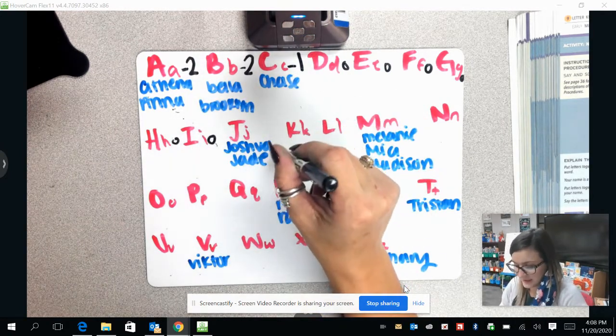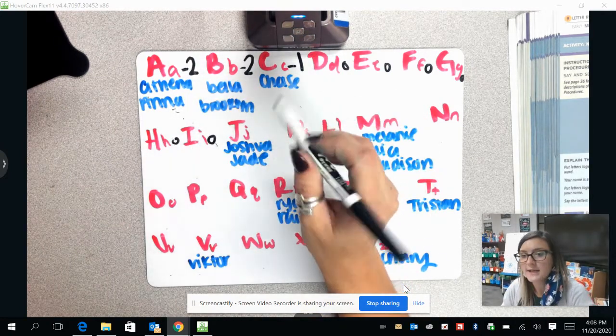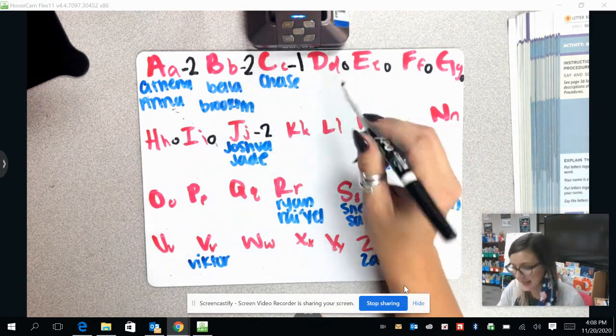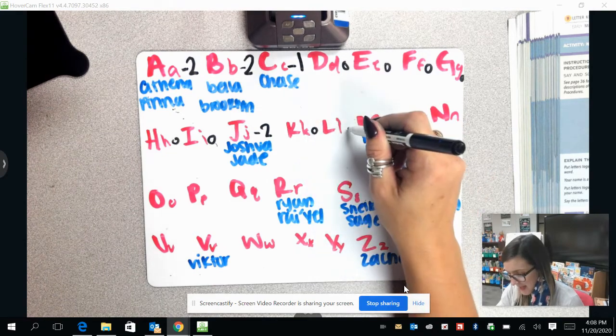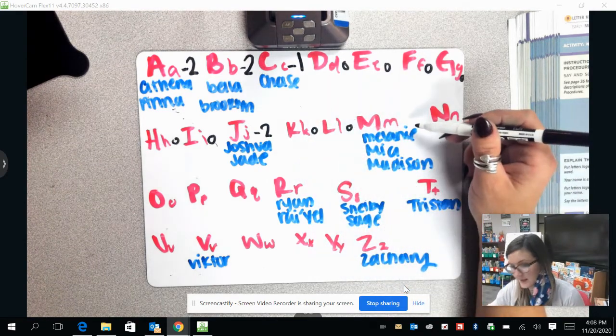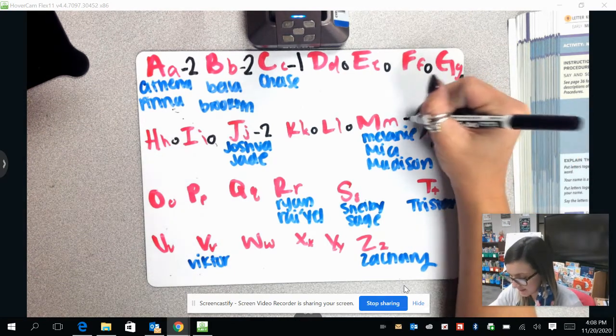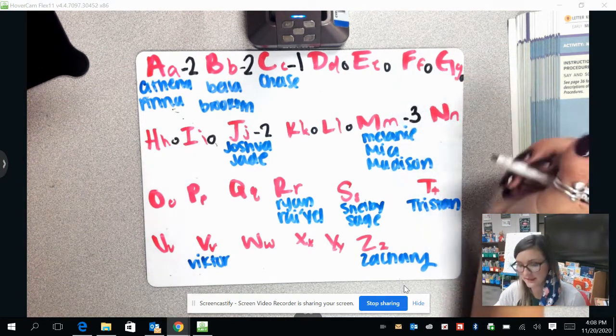For letter J, we have Joshua and Jade. That is two people. Letter K, we have nobody. L, nobody. Letter M, we have Melanie, Mia, and Madison. That is three people that start with letter M.